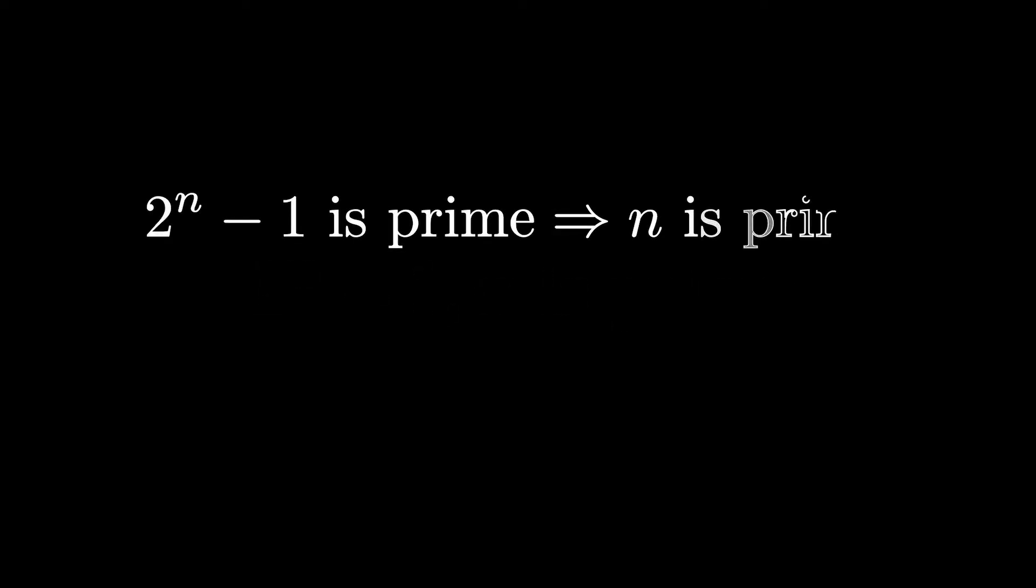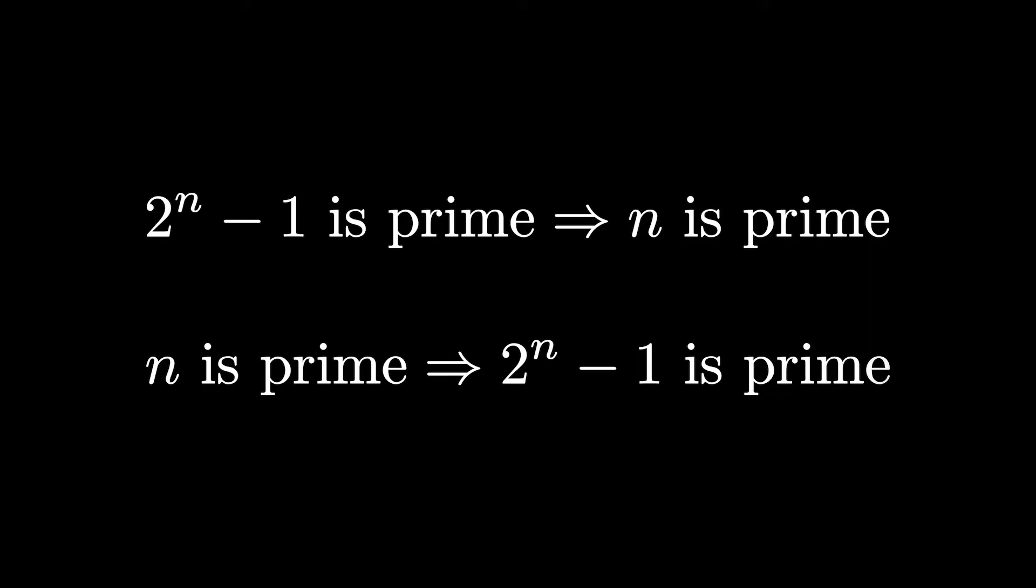So, what's stopping us from putting bigger and bigger prime numbers as n? Well, hold on a moment. We found that if 2 to the n minus 1 is prime, then n is prime. But that doesn't necessarily mean that if n is prime, 2 to the n minus 1 is prime. For example, 11 is prime, but 2 to the 11 minus 1 is 2047, which is 23 times 89. So, we need a definite 100% primality test for 2 to the n minus 1 for some prime n.